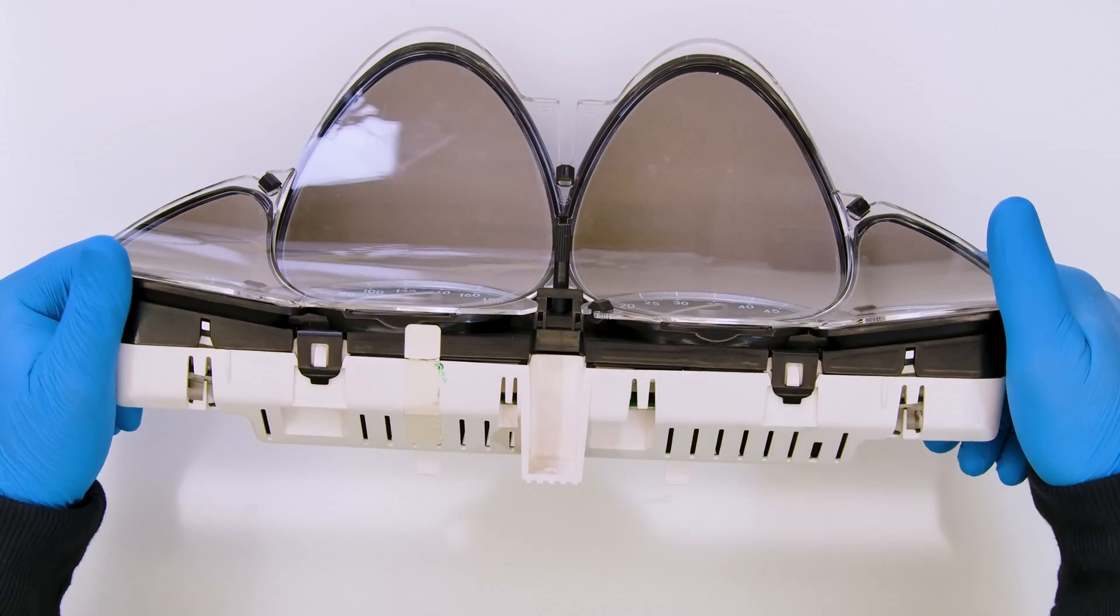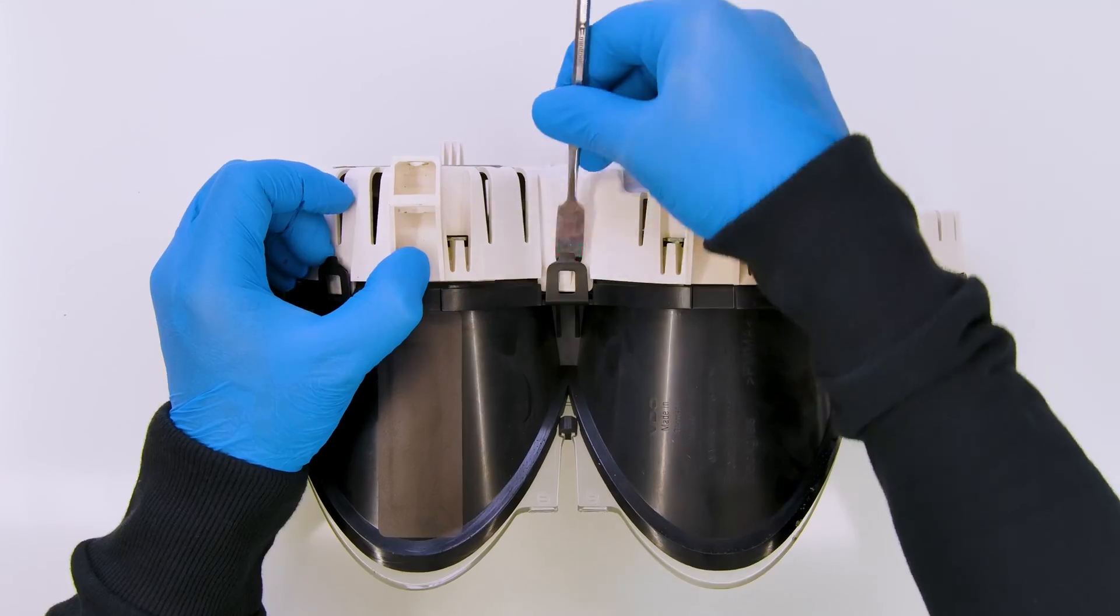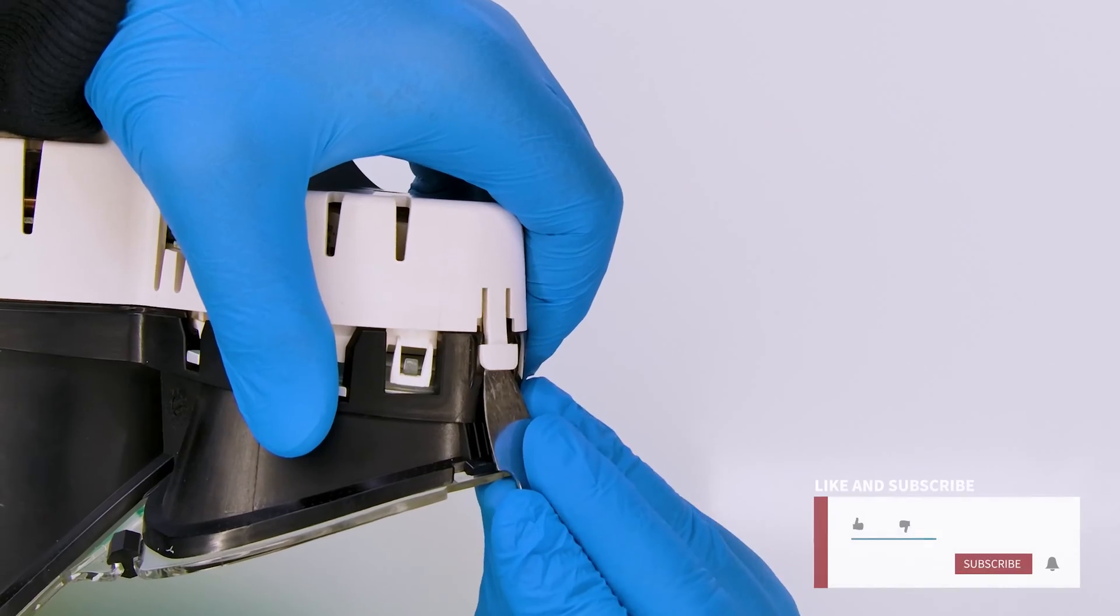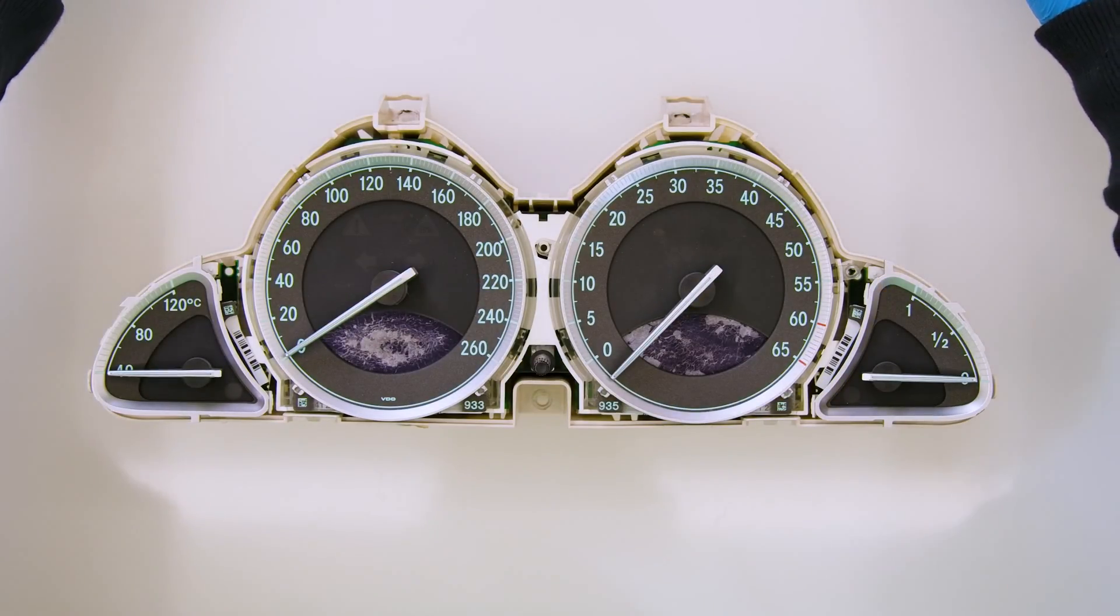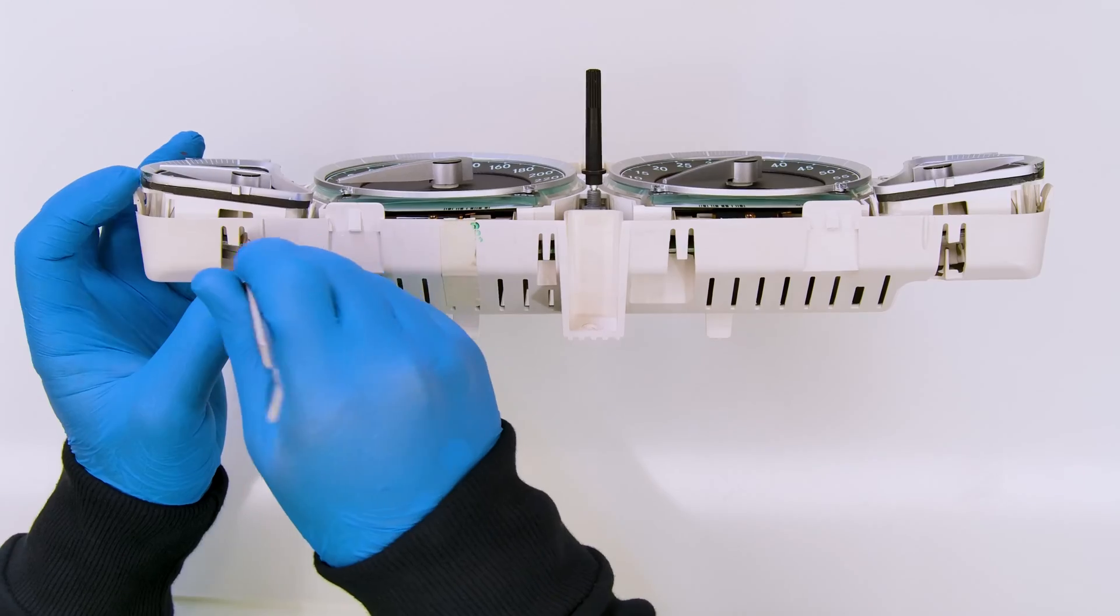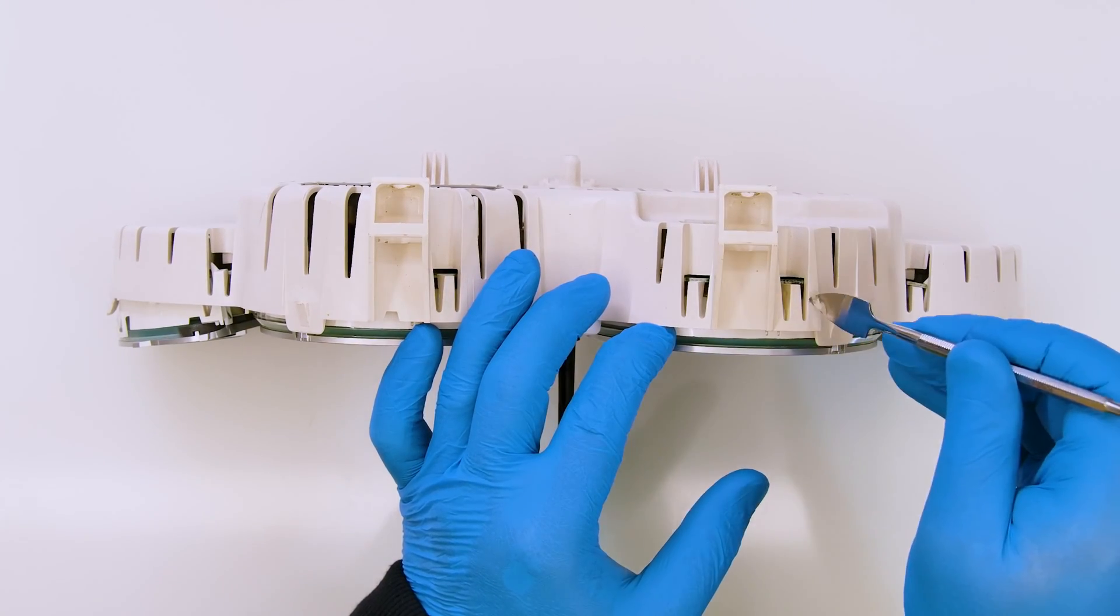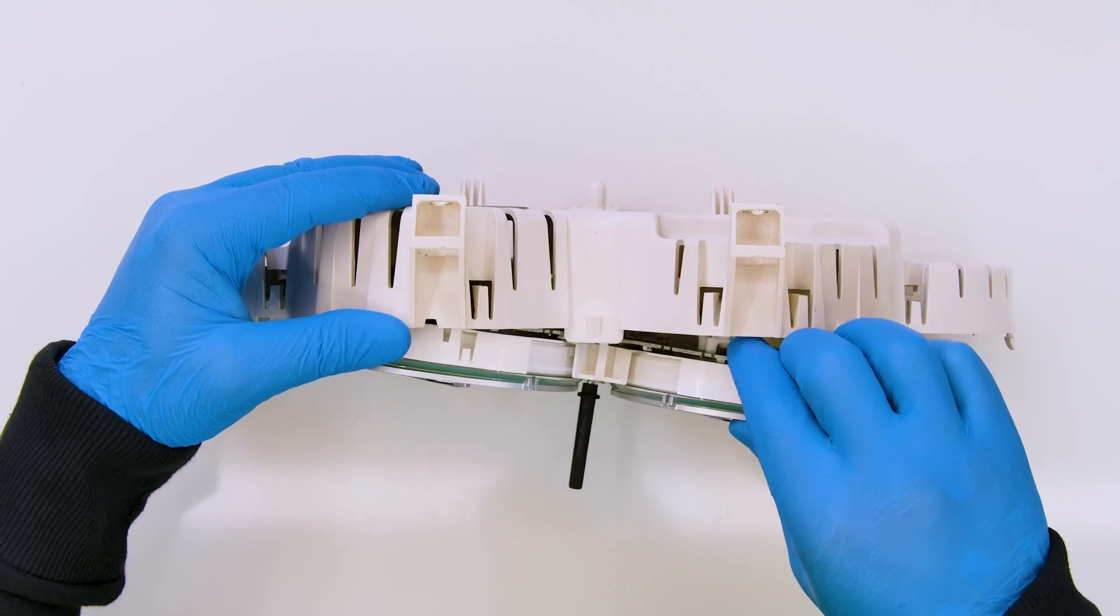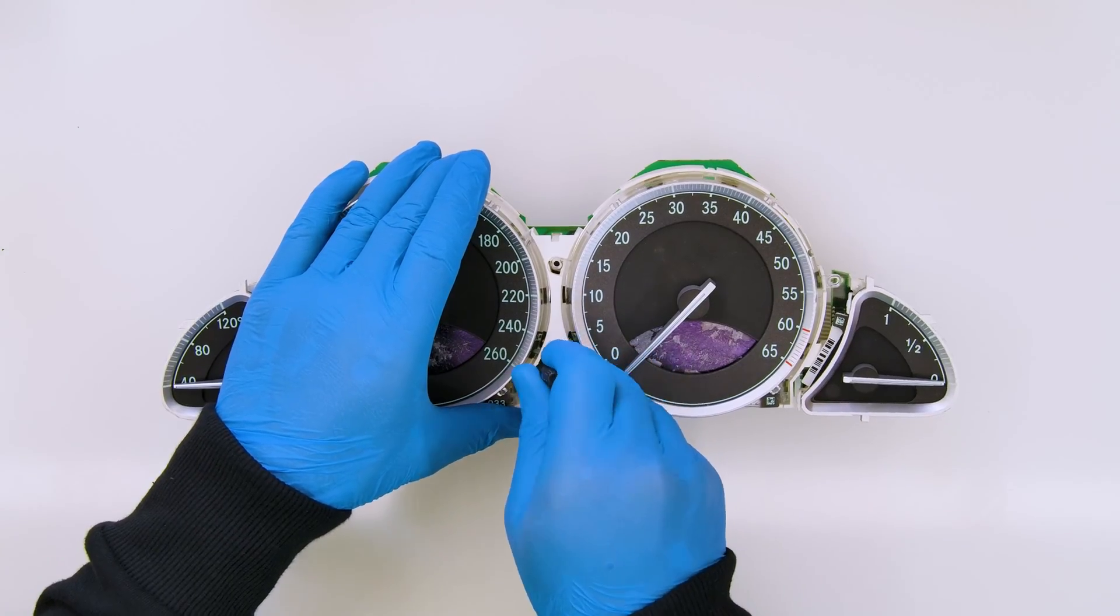Position the dashboard as shown and with the spudger act on the plastic clips to remove the front cover. Undo and take off the rear one as well as shown. Remove the central button.